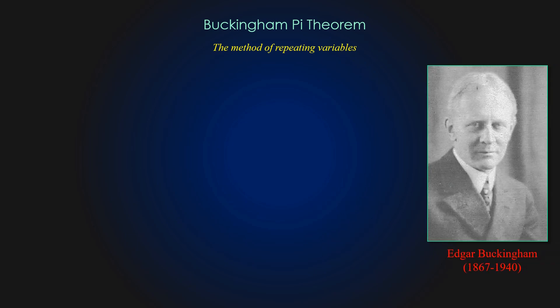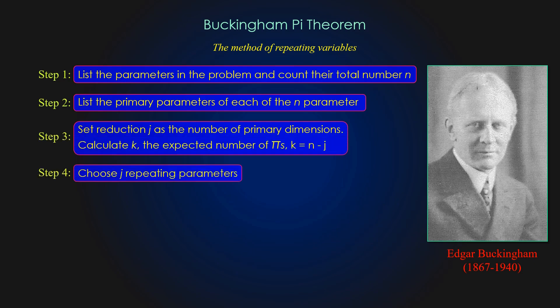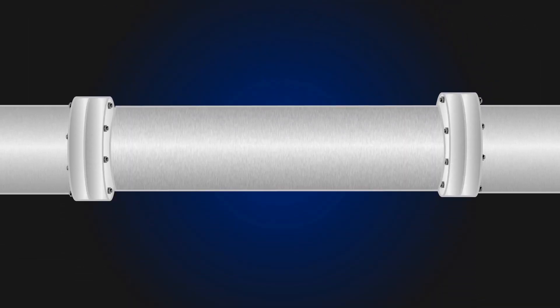The most popular and simplest method to generate non-dimensional parameters is the method of repeating variables known as Buckingham Pi theorem, popularized by Edgar Buckingham. This method includes six steps listed below and will be illustrated using a simple flow problem. In step one, we calculate the number of parameters in a fluid flow inside the pipe.